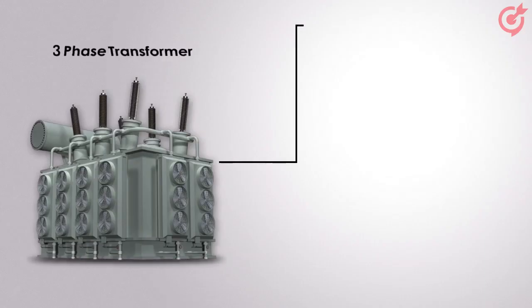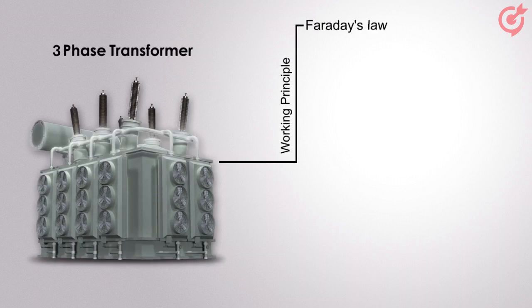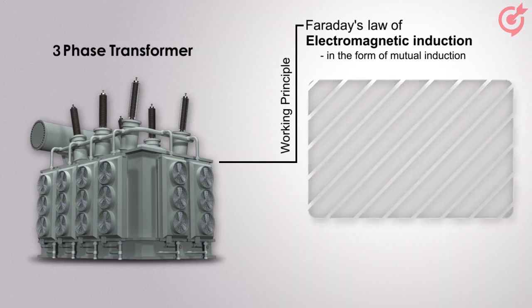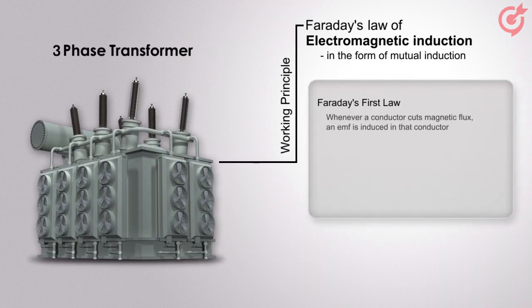The working principle of transformer is based on Faraday's law of electromagnetic induction in the form of mutual induction. Faraday's first law states that whenever a conductor cuts magnetic flux, an EMF is induced in that conductor.